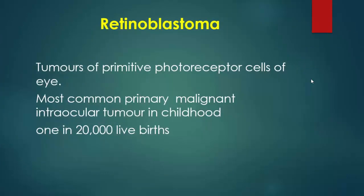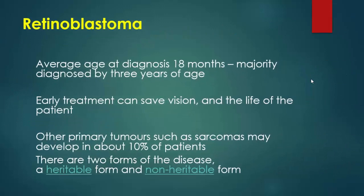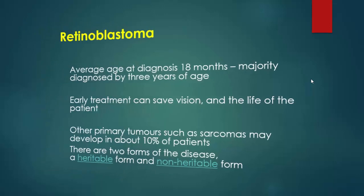Another important intraocular tumor is retinoblastoma. It is a tumor of primitive photoreceptor cells of the eye and is the most common primary malignant intraocular tumor in childhood, occurring in one in every 20,000 live births. Average age of presentation is 18 months, with the majority diagnosed by three years of age. Early treatment can save vision and the life of the patient. Other primary tumors such as sarcoma may develop in about 10% of cases. There are two forms: heritable and non-heritable.